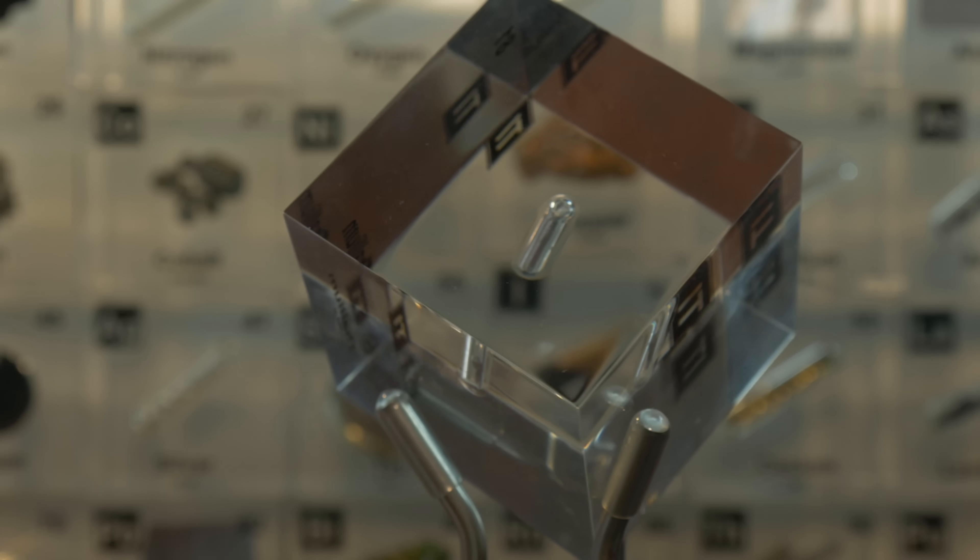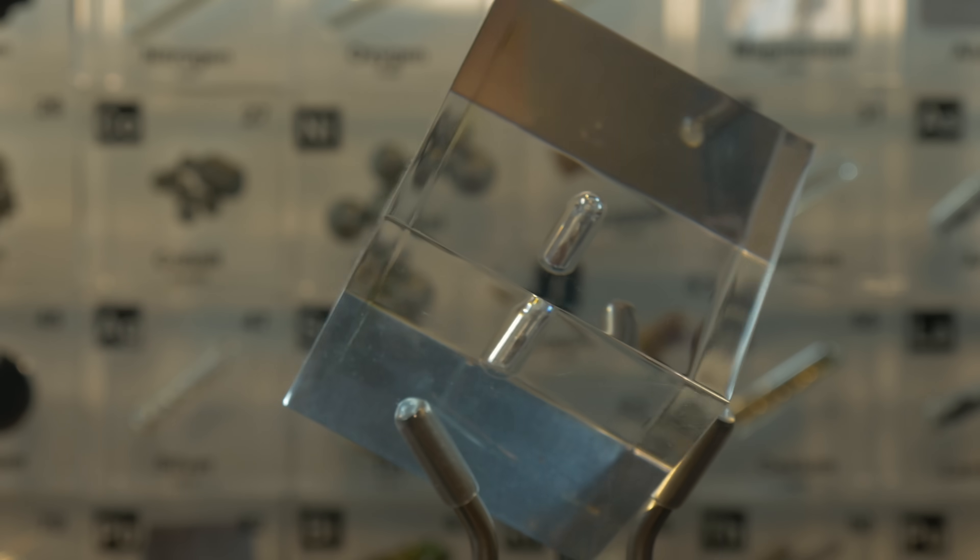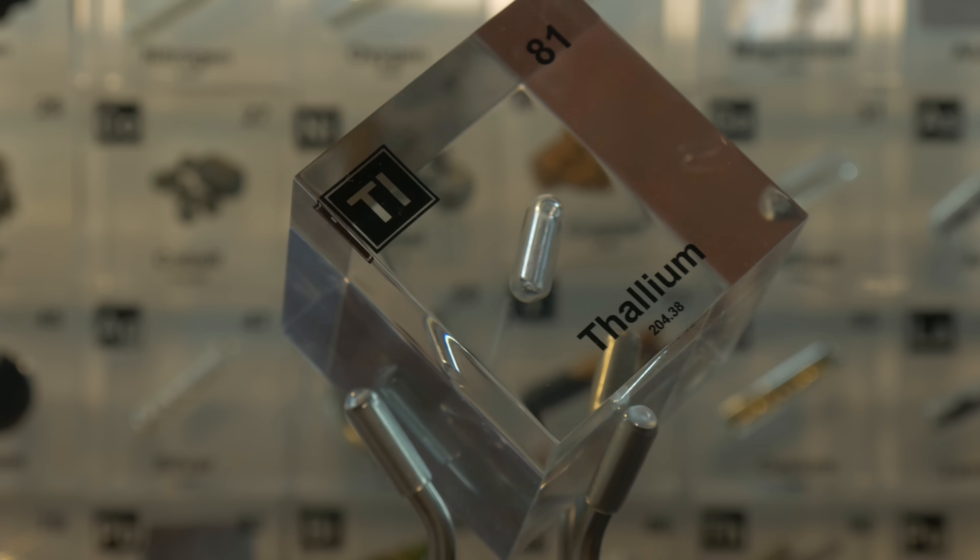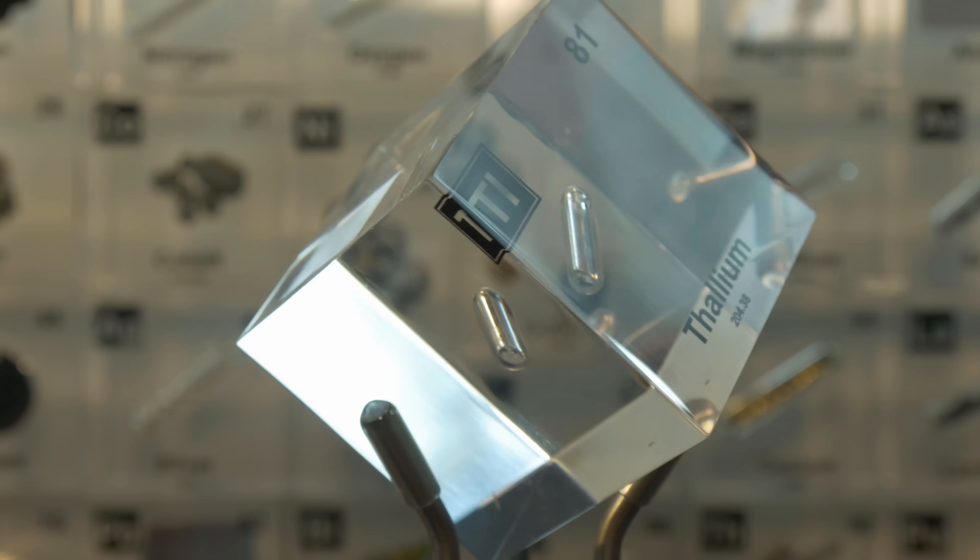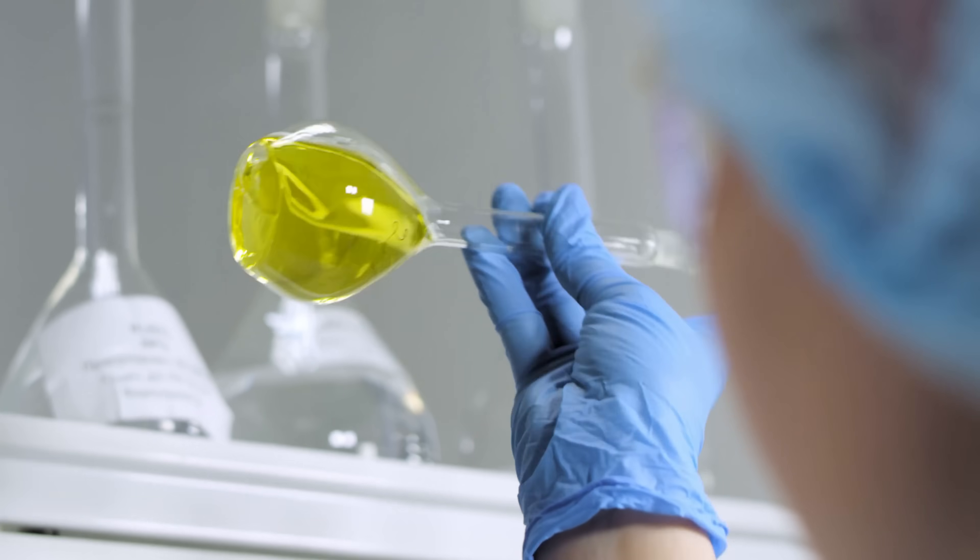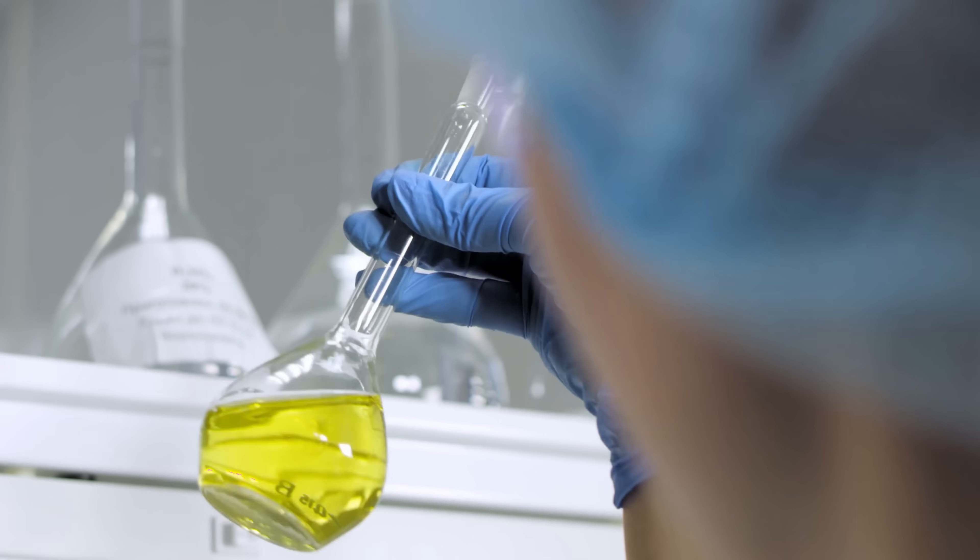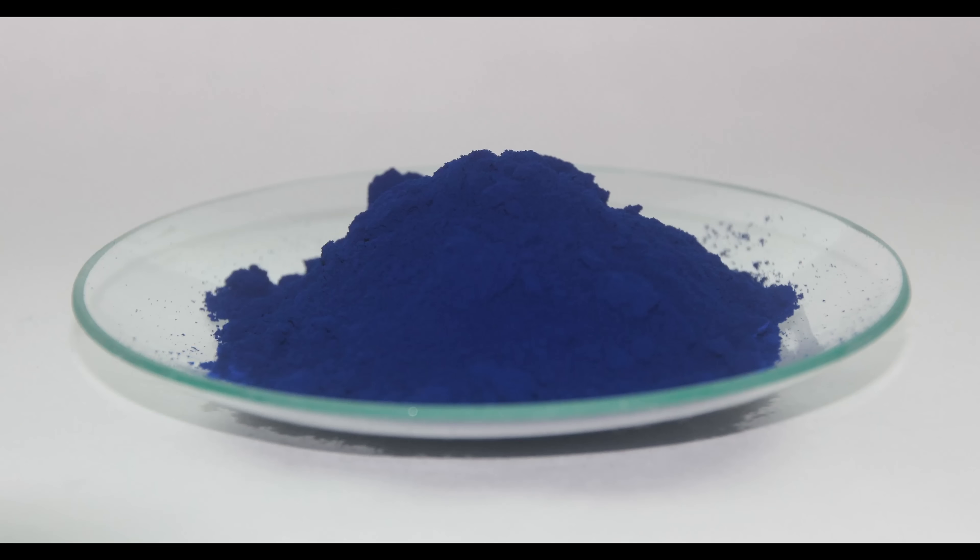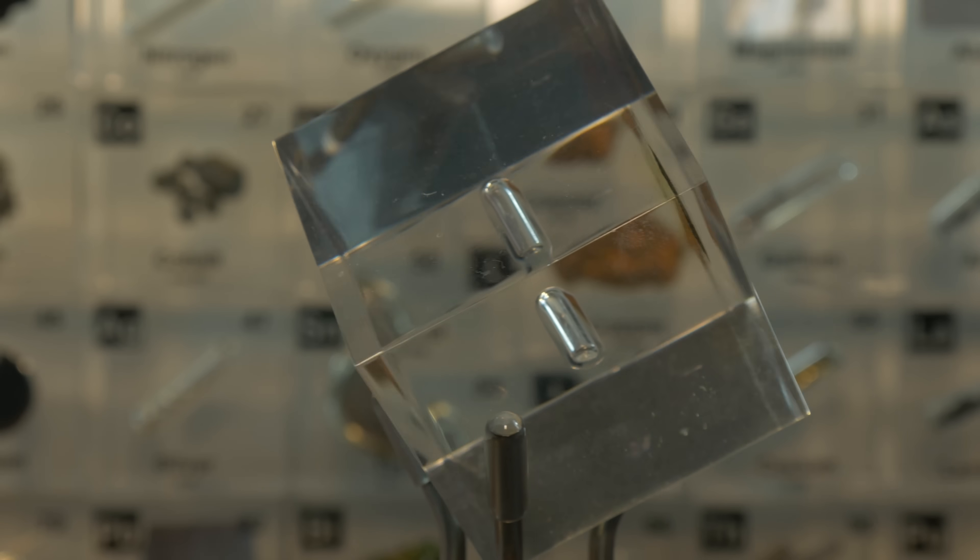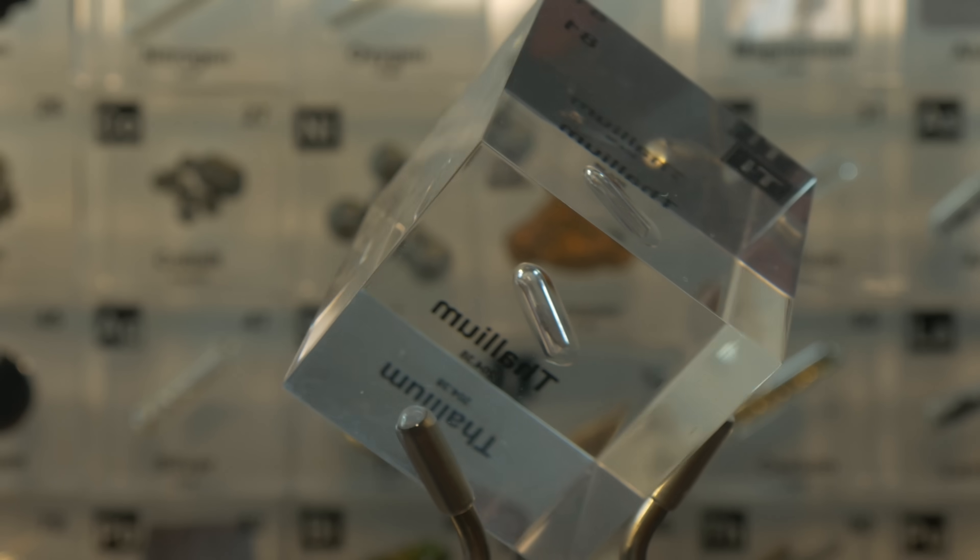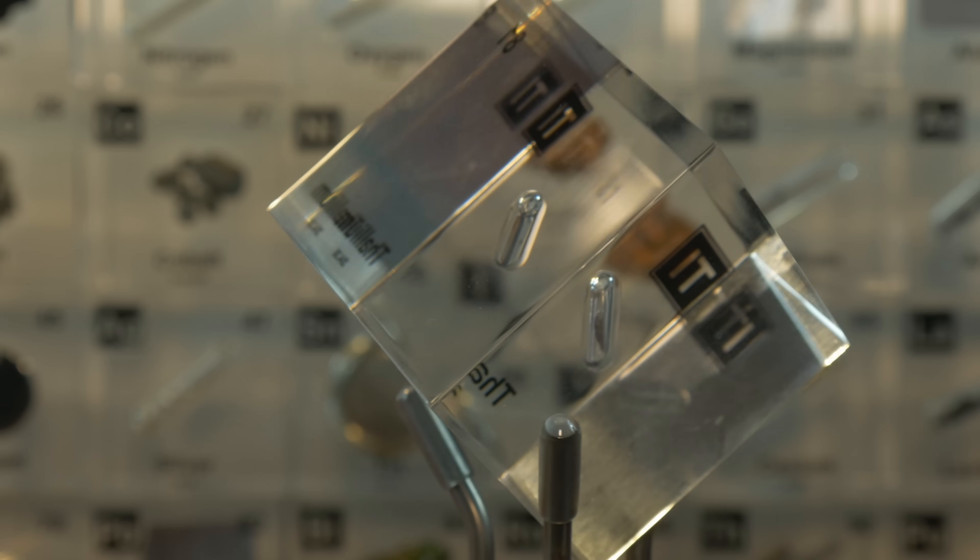The good news is that nowadays thallium poisoning is rare and much more likely to be recognized quickly. The distinctive symptoms, especially hair loss, are taught in toxicology courses, and modern labs can test for thallium in the blood or hair samples with advanced instruments. Now, there's even an effective treatment, Prussian Blue, a medication that acts as a sort of a chemical sponge to bind thallium ions in the intestines and whisk them away. The sooner it's given, the better the outcome. So while thallium remains a fearsome poison, it is not as easy for modern-day poisoners to get away with it as it once was.